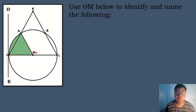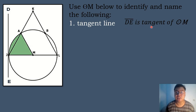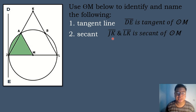Let us now use circle M below to identify and name the following parts of the circle. Number one, the tangent line. The tangent here is line segment DE because it intersects the circle at exactly one point — the point of tangency is point J. So line segment DE is tangent to circle M. Next, the secant of the circle intersects at exactly two points and contains a chord. The secants of circle M are line JK, because it contains chord JA, and line LK, because it also contains chord LB. So line JK and line LK are the secants of circle M.